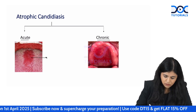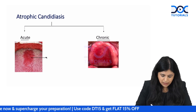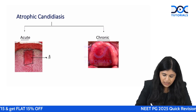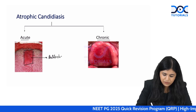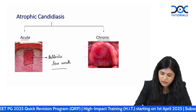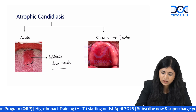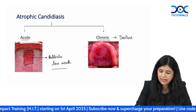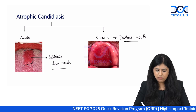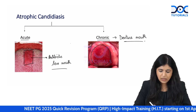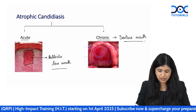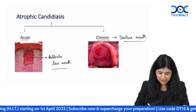Atrophic candidiasis is of two types. Acute atrophic candidiasis shows atrophy of papillae on the tongue, which appears smooth, flat, and red; it occurs after a course of antibiotics and is also called antibiotic sore mouth. Chronic atrophic candidiasis occurs in elderly patients who use dentures with poor hygiene — also called denture mouth. Both present with intense burning sensation. Treatment for all types is fluconazole.